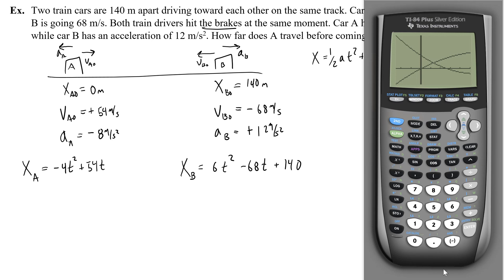So guess what? They collide. It's not good for anybody. Okay, so how do I find that collision? How do I figure out how far A has traveled by the time that it hits train B? Well, on your graphing calculator, you have a certain function called intersect.